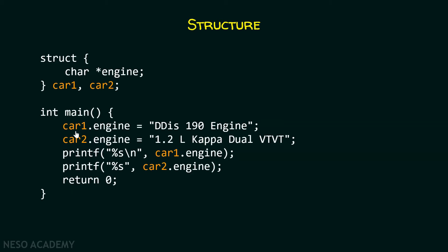Now, within this main function we have car1 dot engine. With the help of dot operator, we would be able to access the member of the structure. So, car1 can access member of the structure using dot operator. Car1 dot engine means that we are talking about engine of car1. And it is going to be DDIS 190 Engine. And car2 dot engine should be 1.2 L Kappa Dual VTVT.